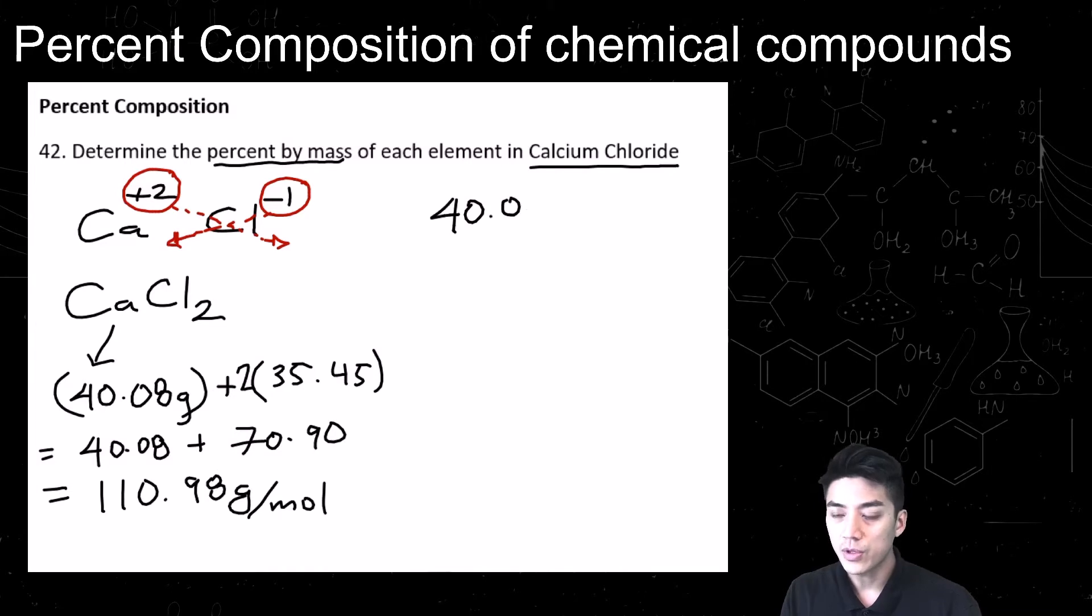So now you take 40.08, and this is to find the percentage of calcium, 40.08 divided by the total, which is 110.98.